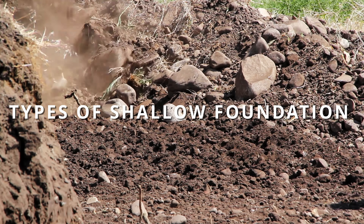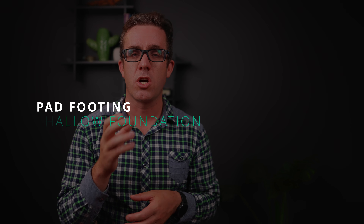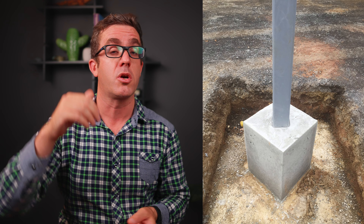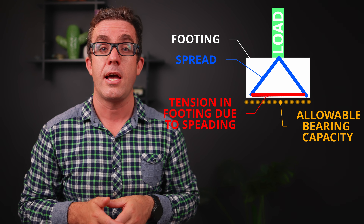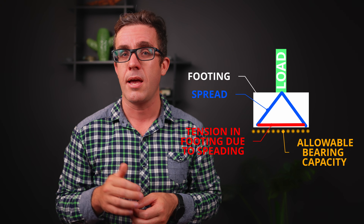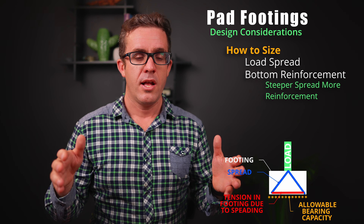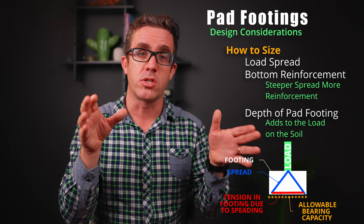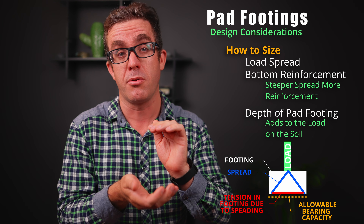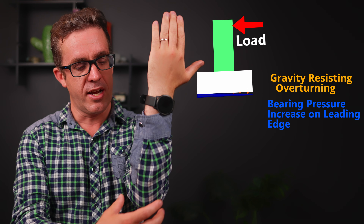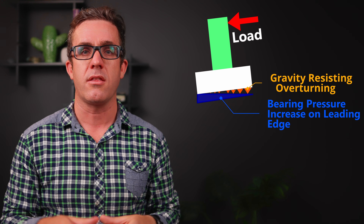The most common shallow foundation type is the pad footing — an isolated pad typically receiving a point load from a column above. The pad is sized based on the nominal load and the allowable bearing capacity from the geotechnical engineer, using a strut-and-tie action to spread the load across the area underneath. You need to check that it spreads at the right angle, that the tie capacity in the bottom is adequate, and that you've spread the load far enough. Don't forget the self-weight of the pad footing itself adds to the soil load. Pad footings can also be rectangular when the column must resist lateral actions.